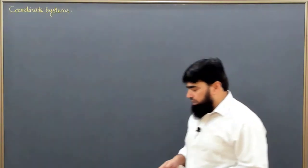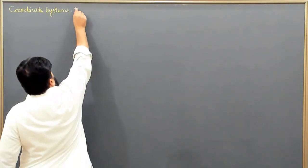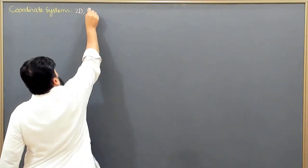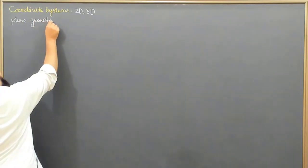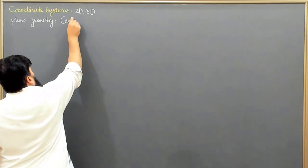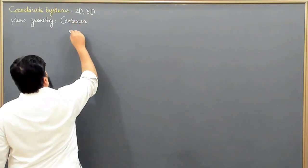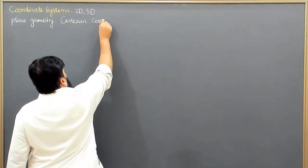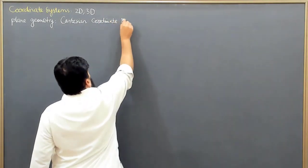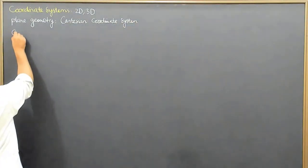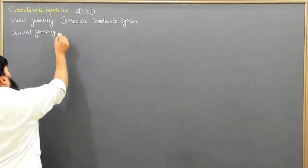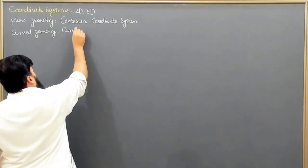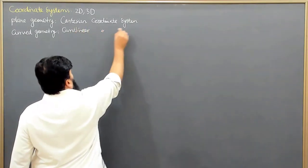Inside the Cartesian coordinate system we may have this system in 2D or 3D. For plain geometries we use the Cartesian coordinate system in 2D and 3D, and when we are having a curved geometry then we use the curvilinear coordinate system.